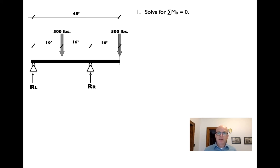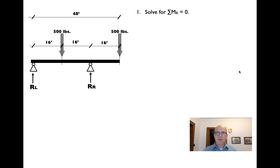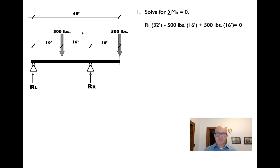In every case we'll start by finding rotational equilibrium around one of the supports — by tradition, we'll start with the moment around the right support. We have three forces with a moment around that support: RL with a moment arm of 32 feet, and two 500-pound loads. I always think of clockwise as positive, so RL times 32 going clockwise is positive.